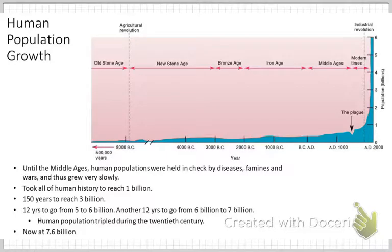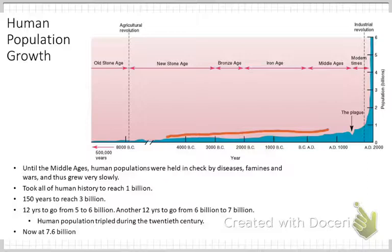If we look specifically at the human population, we can see on this graph of human population growth that for a very long time the human population struggled to increase in size. Many different things prevented large growth, but it started to increase more rapidly due to innovations such as tool usage, then agriculture, and eventually industrialization. As we understood how disease spread and improved medical care, all of those things led to the very rapid population growth we see today.